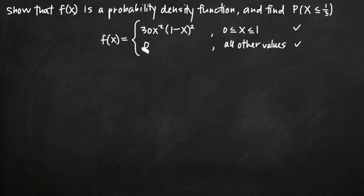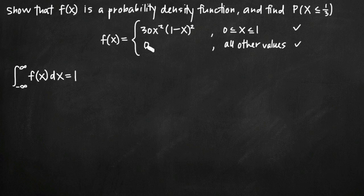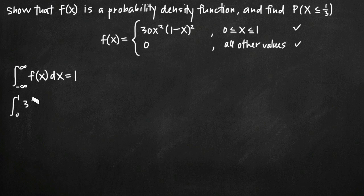The second part is showing that the integral from negative infinity to positive infinity of f(x) dx is equal to 1. Since the function is 0 outside the interval 0 to 1, those parts don't affect the integral. So all we need to verify is that the integral of f(x) on the interval 0 to 1 is equal to 1. We rewrite it as the integral from 0 to 1 of 30x squared times the quantity 1 minus x squared, and verify that equals 1.